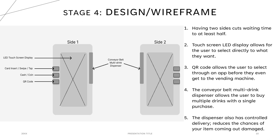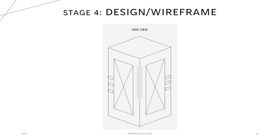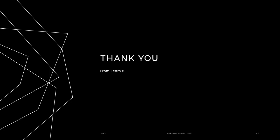Next is one of our biggest implementations: the conveyor belt multi-drink dispenser. This is where users can select more than one drink at the same time and only need to pay once. Previously, if someone wanted to buy two drinks, they had to go through the process of selecting, paying, dispensing, and retrieving twice. The conveyor belt dispenser also has a controlled delivery where items dispense safely all at once. Here is a quick review of our final design. We also wanted to point out that we wanted it to be a corner unit. From Team Six, thank you for your time.